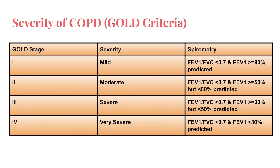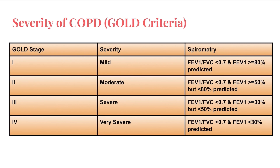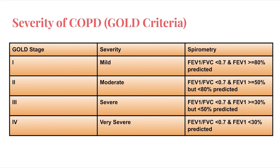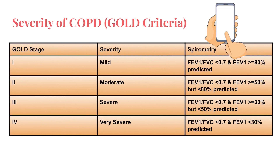The GOLD criteria is a very important table dividing COPD severity into four stages. In spirometry, FEV1/FVC less than 0.7 is the main diagnostic criterion for obstructive disease. Severity is graded by FEV1: more than 80% is Stage 1 (mild); 50–80% is Stage 2 (moderate); 30–50% is Stage 3 (severe); less than 30% is Stage 4 (very severe). Keep a screenshot — questions have come from this.